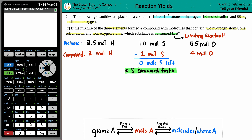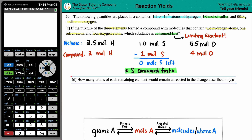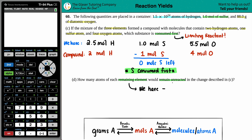Now let's quickly address letter D. Letter D asks how many atoms of each remaining element would remain unreacted in the reaction described in letter C, where we had two moles of hydrogen, one mole of sulfur, and four moles of oxygen. We kind of already discussed it — how much is going to be remaining is the subtraction of what we have minus what we need, or whatever the compound is telling us it needs.